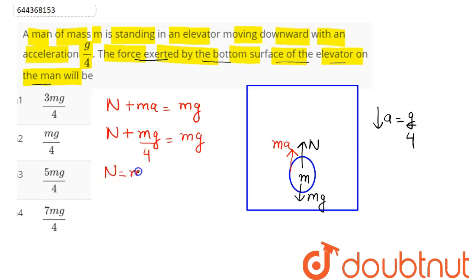Hence, n comes out to be mg minus we can say as mg by 4. So this normal here comes as 3 by 4 of mg which here is option number 1. Hence, we can say 1 is the correct answer. So 1 is our answer.